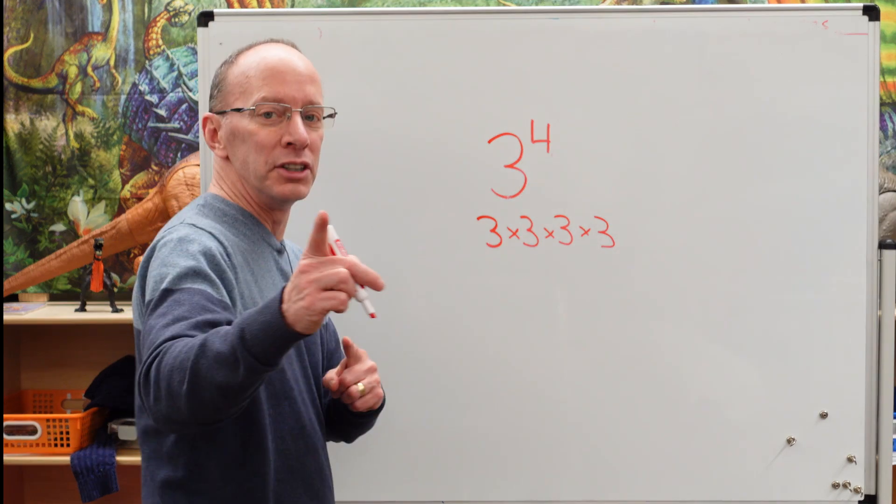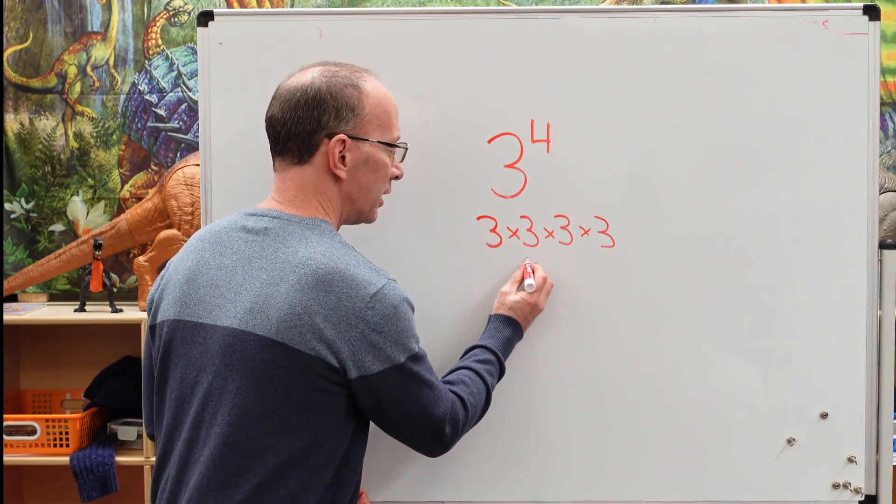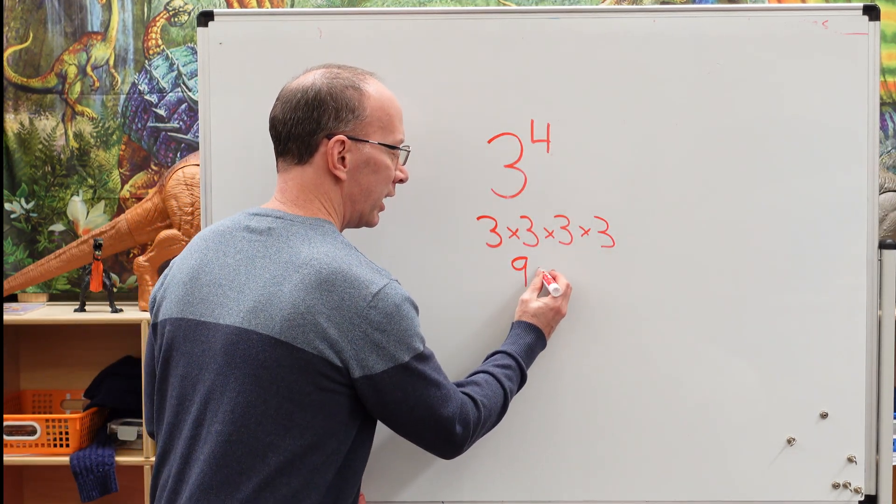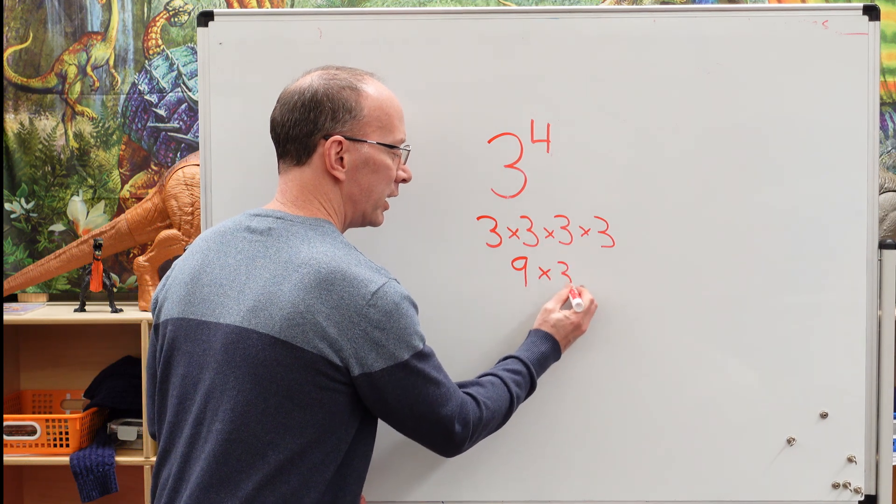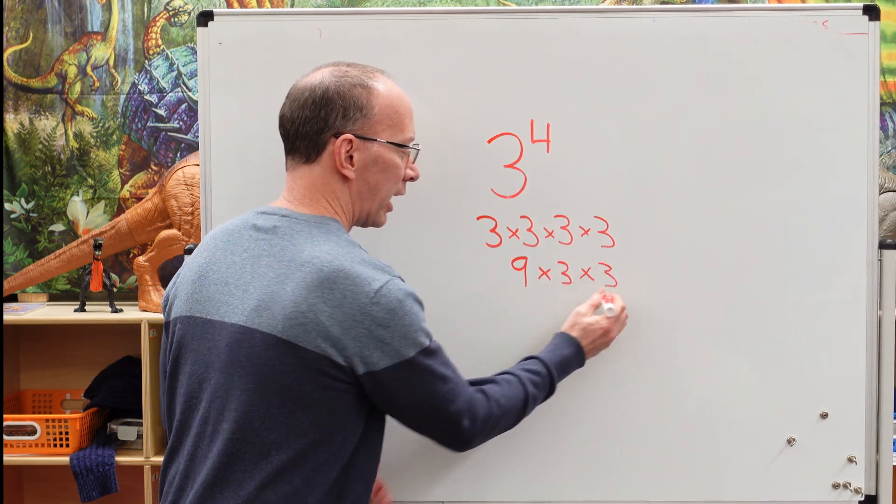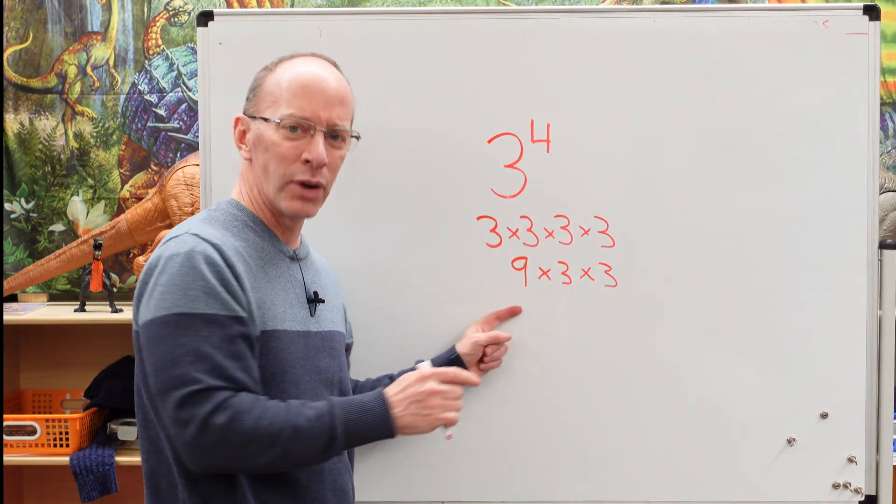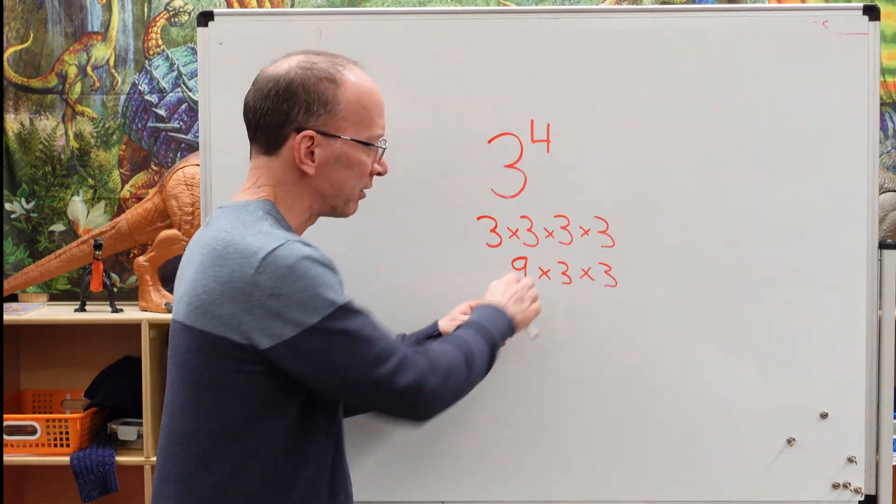Three times three is nine. Nueve. So I'm going to put the nine right here. And I'm just going to put the three times the three. I already did these two numbers. And I'm writing this out.